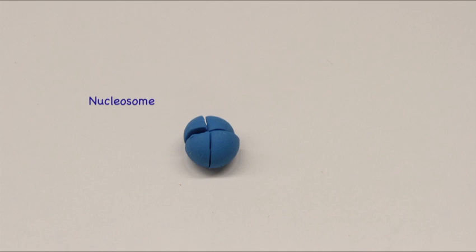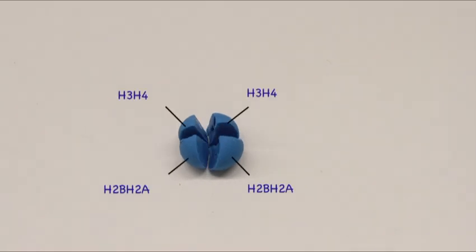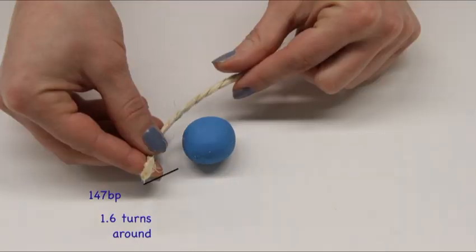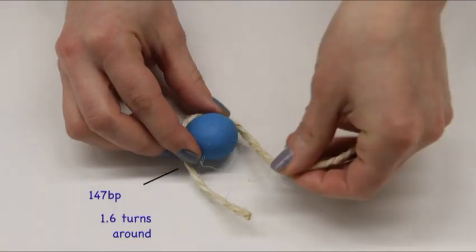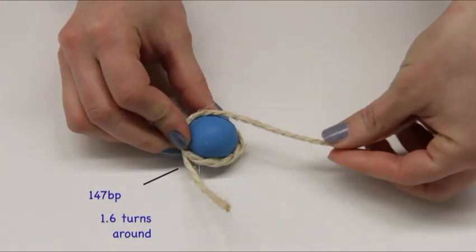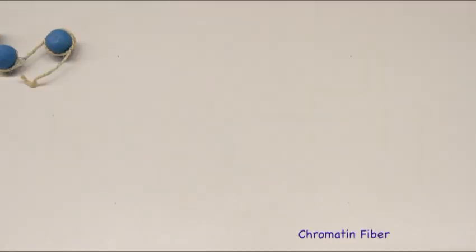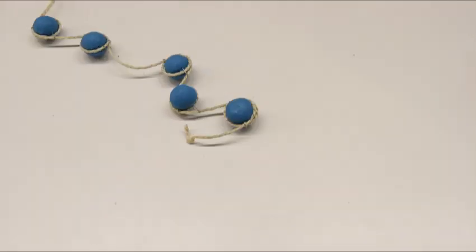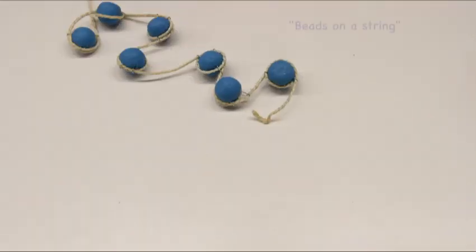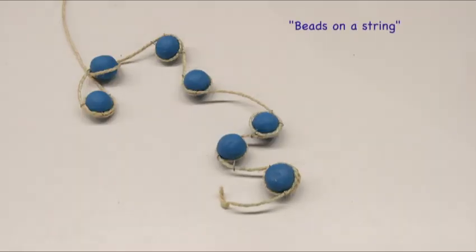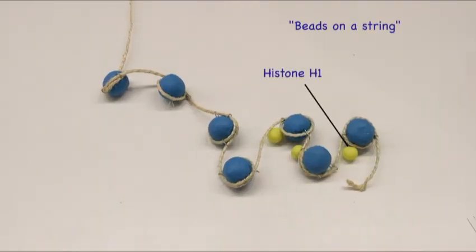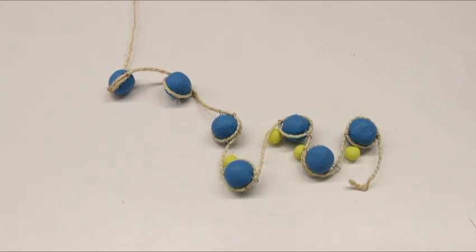Within the chromatin, the repeating unit is the nucleosome, made up of 147 base pairs of DNA wrapped in two turns around the core histones. Nucleosomes take up the form of beads on a string-like fiber, and the linker histone H1 helps further compact the fiber.